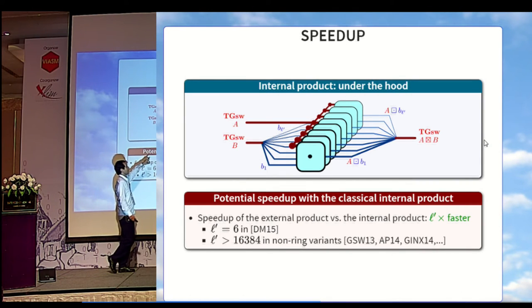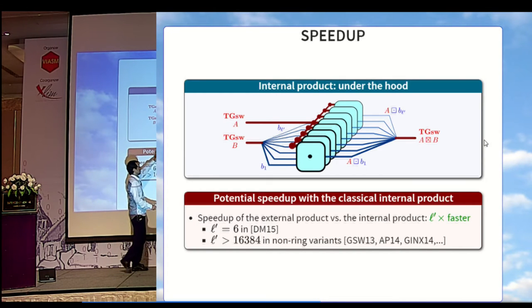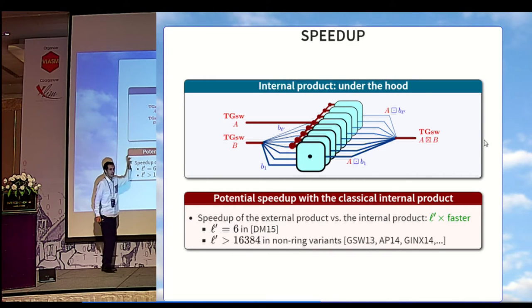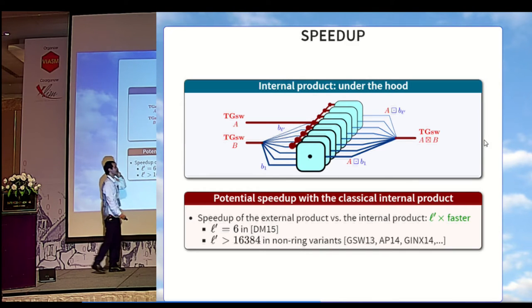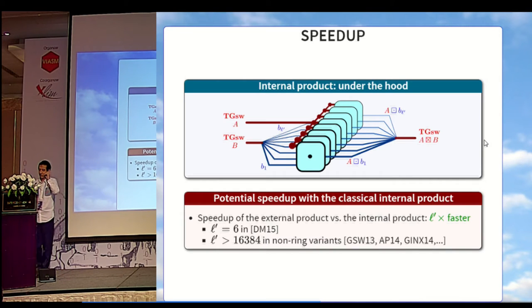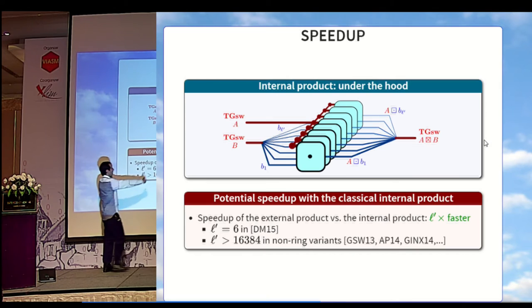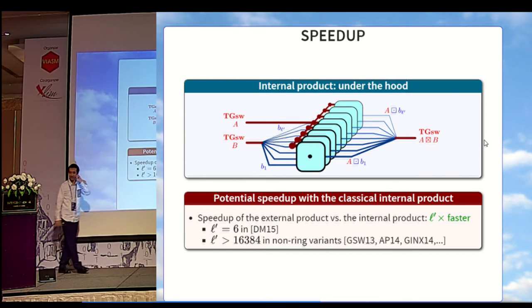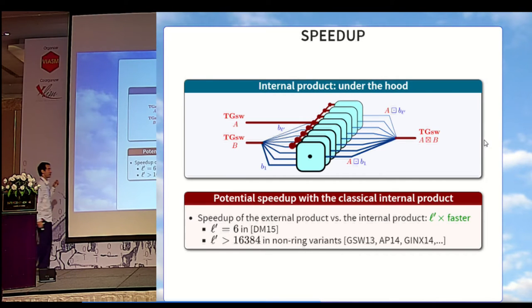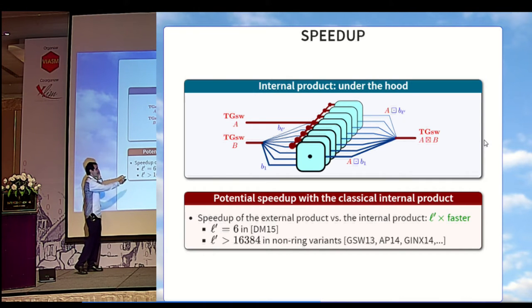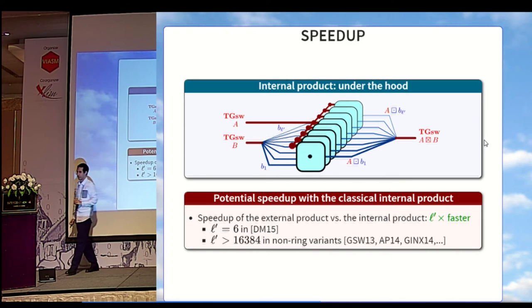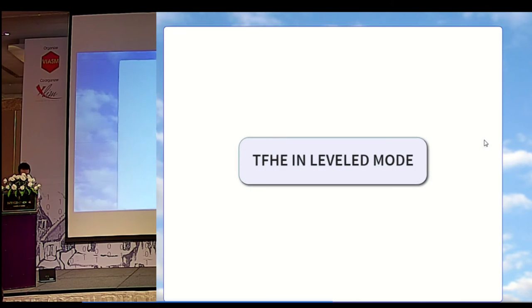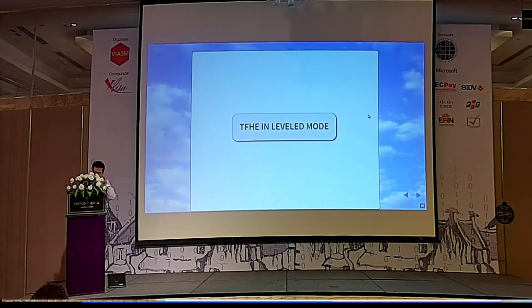Just to give you an idea of the potential speedup, now that the external product is defined, if you look at what the internal product is doing under the hood, you will realize that it computes L independent external products, one for each coordinate of B. If we can manage to get the same semantic using only one of them, for example this one, we can achieve a potential speedup of a factor L. Also, the second thing is that if we use the external product, we can use the full power of the continuous message space instead of having the restriction of being one particular row of a GSW sample. Just to give you a numerical idea of what can be the speedup, in the ring variant of Ducca-Mitiancio, the speedup would be a factor 6, but in all other non-ring variants, the speedup would be much larger than 16,000, which is really a lot.